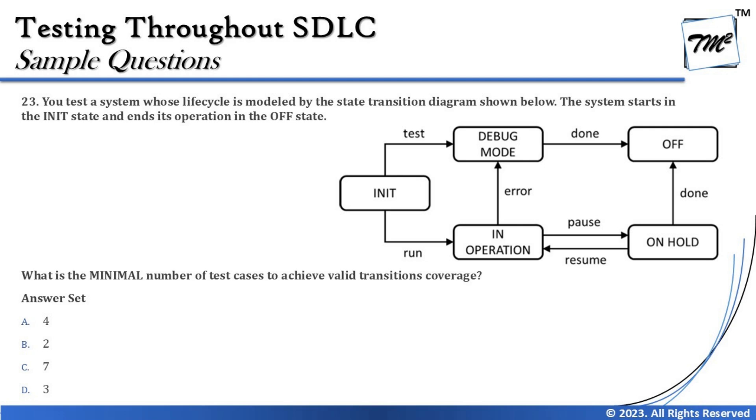For the remaining transitions — pause, resume, and the done on the right side — a third test can cover: Init → In Operation → On Hold → In Operation → On Hold → Off, using the run/pause/resume loop and then done. That covers all valid transitions. So with just three test cases we can achieve full valid transition coverage.